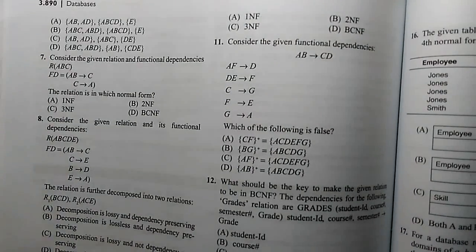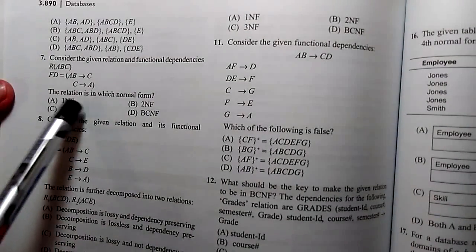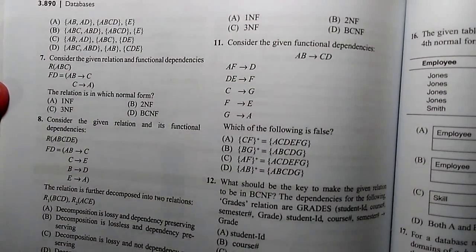So similarly we can find 3NF, BCNF from any example. Let's check this example.